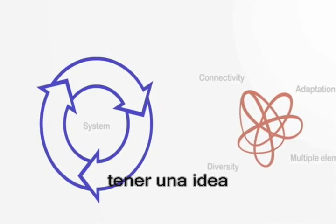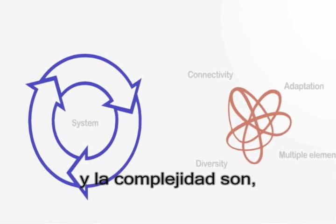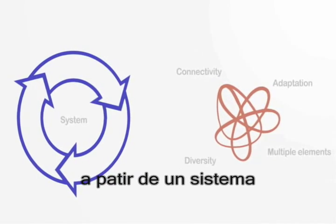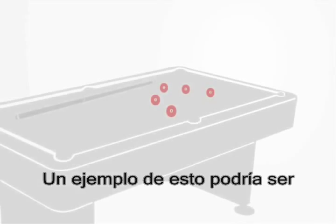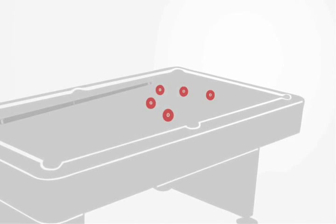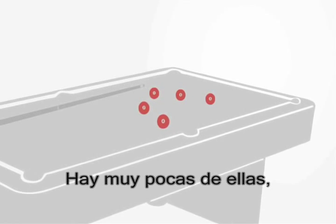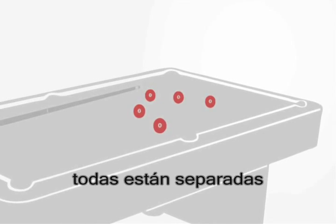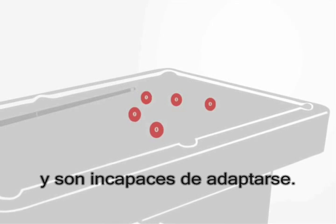So now we have an idea of what systems and complexity are. Let's put them together, starting with a system with a low level of complexity. An example of this might be a set of five billiard balls on a table. There are quite few of them, they are all the same, and they are all separate from each other, and they are incapable of adapting.